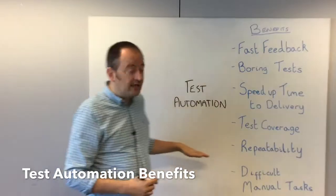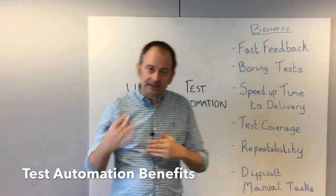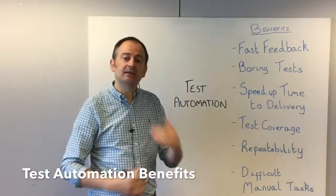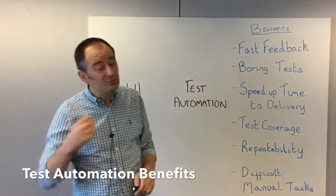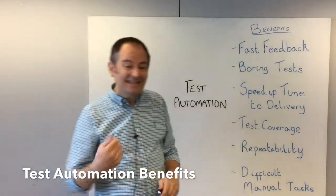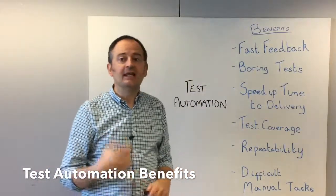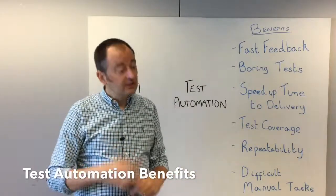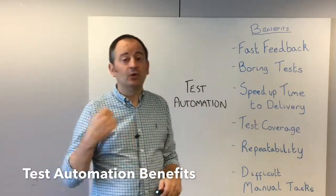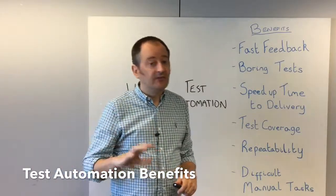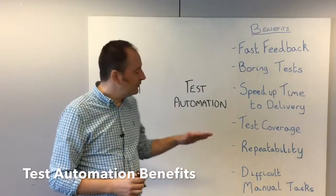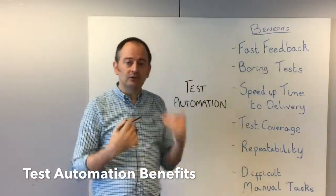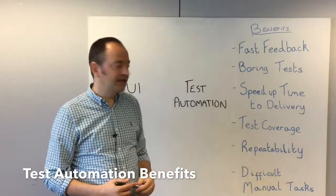We also want repeatable tests that are consistent and run over and over again, making sure we're doing exactly the same things. Manual tests make it very easy for testers to cut corners — whether they're being lazy, whether they're too familiar with the process, or whether they just make mistakes. Automated tests are always one hundred percent consistent and always do exactly the same thing.